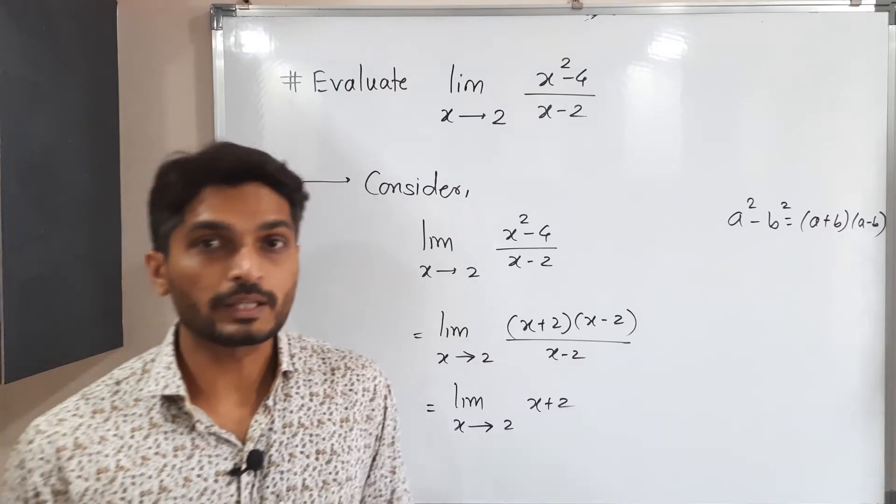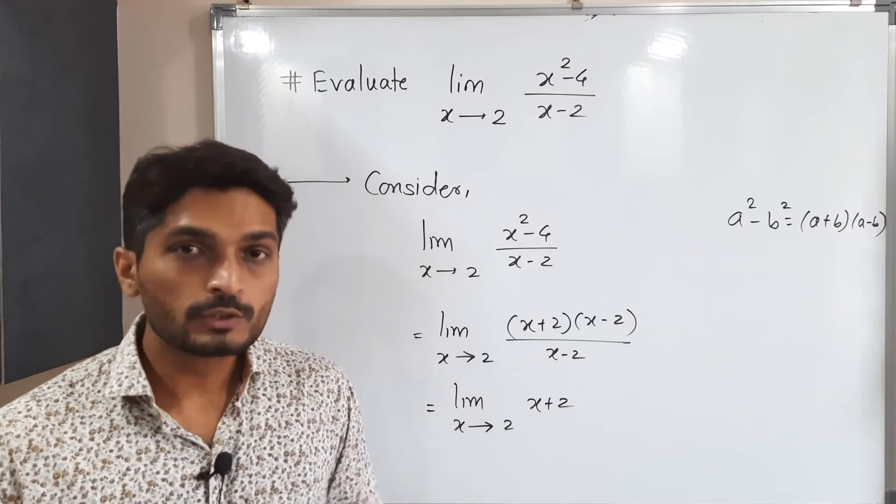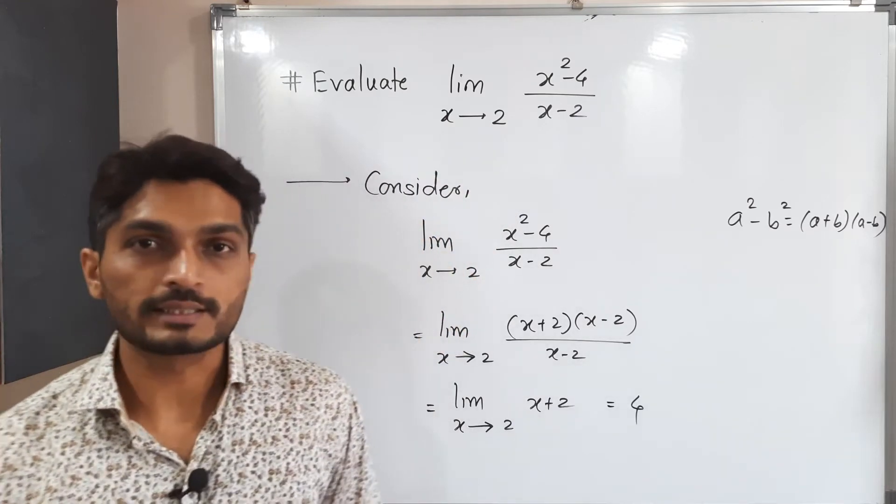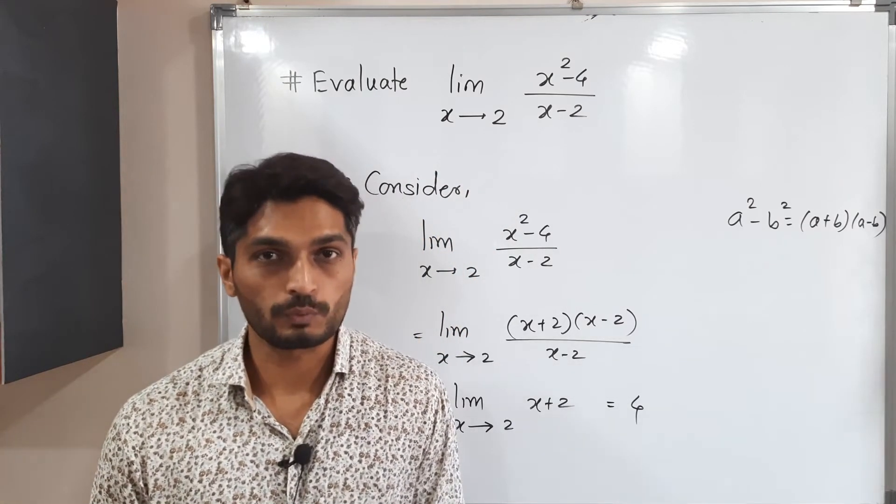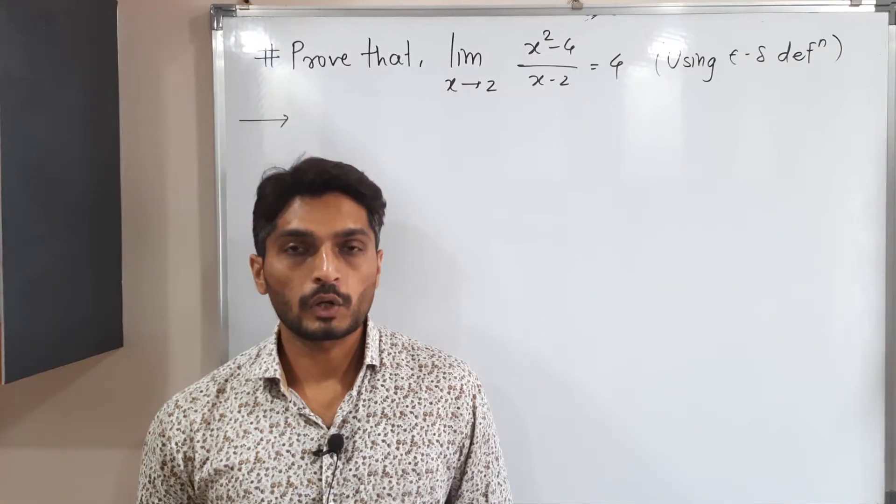After that, we can simply put x is equal to 2 here. I am applying limit. So I am putting x is equal to 2. So 2 plus 2, 4. So the value of this limit is 4. Yes, this limit exists and its value is 4. Make a screenshot of it. Then we will discuss next example.